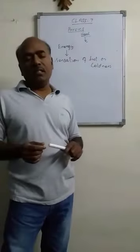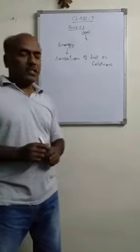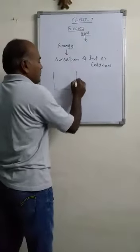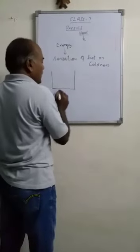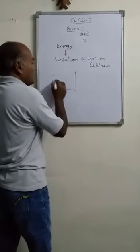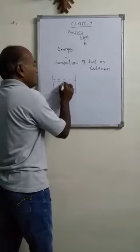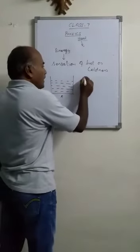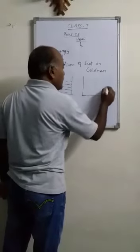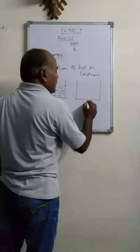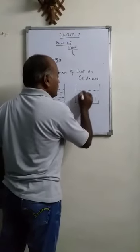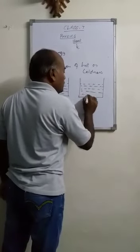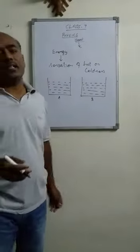To discuss this, we take two containers in which water is taken. Container A — water is filled in this container up to a certain level. And another container, labelled as B, is also filled with water. But these two waters are in different states.